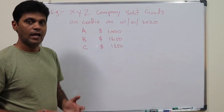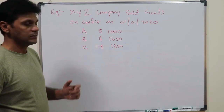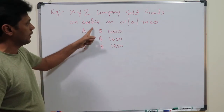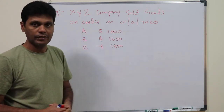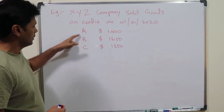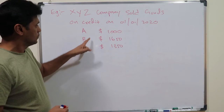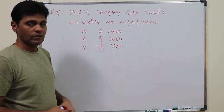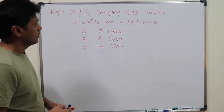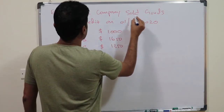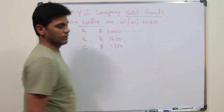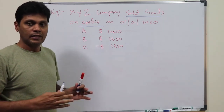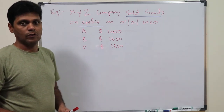Now let's take an example and try to record transactions in the books of original entry. XYZ Company sold goods on credit on 1st January 2020. The customers are Customer A, Customer B, and Customer C. Customer A was sold one thousand dollars, Customer B one thousand six hundred and fifty dollars, and Customer C one thousand three hundred and fifty dollars. These are credit sales.